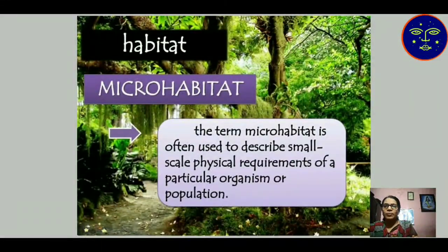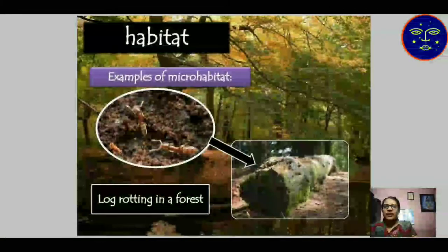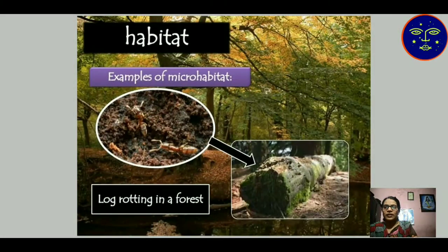A microhabitat: the term microhabitat is often used to describe the small-scale physical requirements — meaning a small quantity of requirements — of a particular organism or population. An example of a microhabitat is a log rotting in a forest. In a forest ecosystem, when wood is there, log-rotting microbes are present for the rotting of this wood.